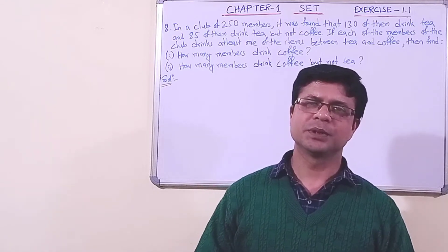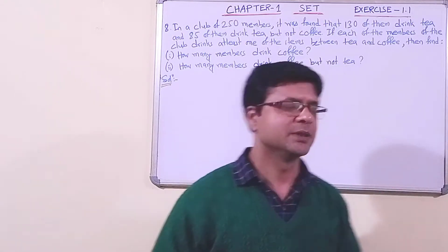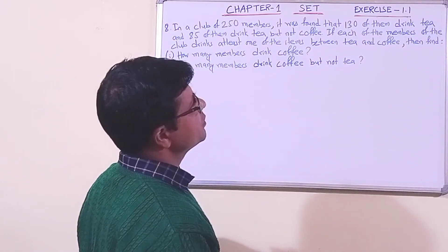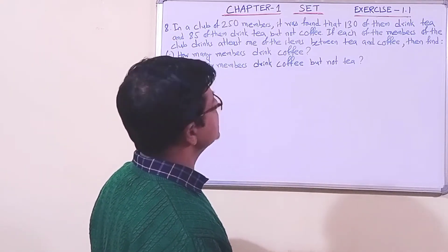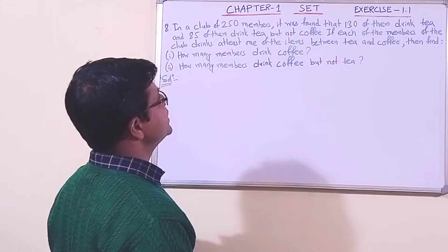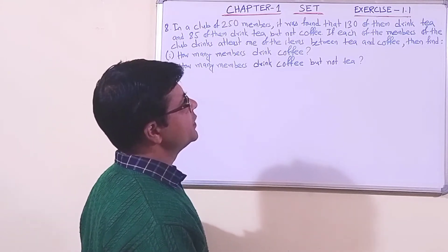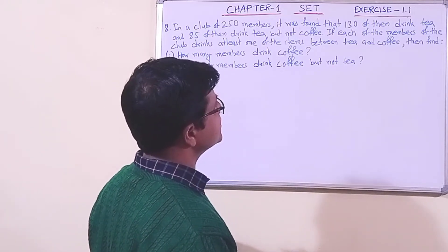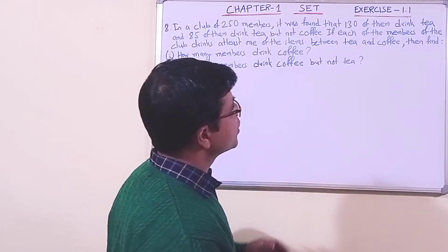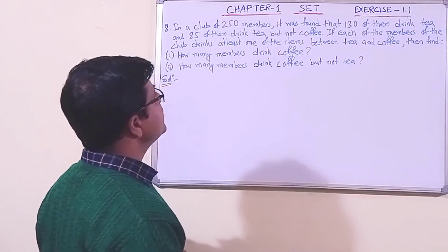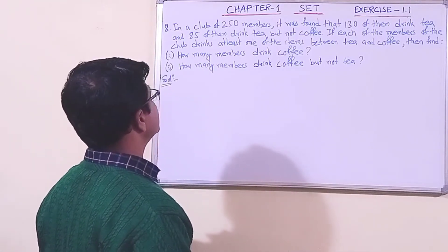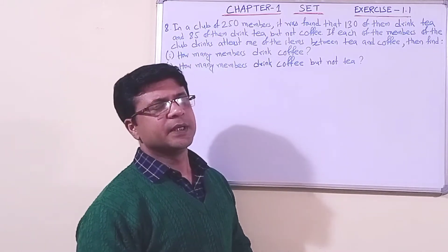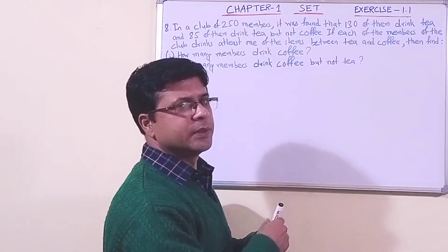Hello students. Now we have taken question number eight. Let us read the question: In a club of 250 members, it was found that 130 of them drink tea and 85 of them drink tea but not coffee. If each of the members of the club drinks at least one of the items between tea and coffee, then find: number one, how many members drink coffee, and number two, how many members drink coffee but not tea.